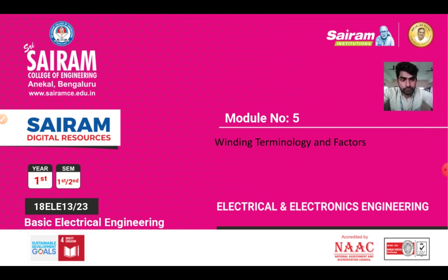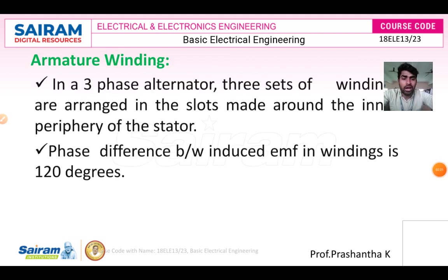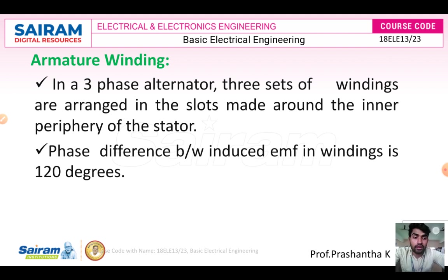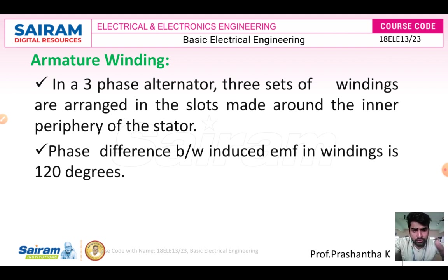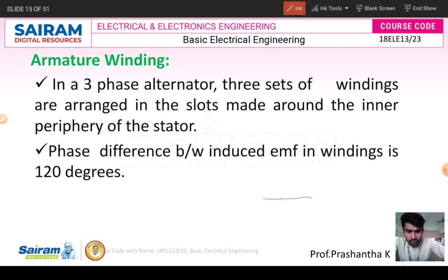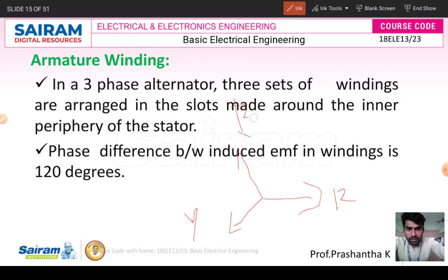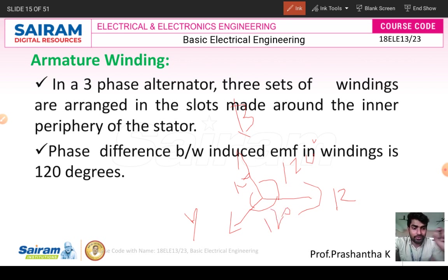The armature winding is placed in the stator with three-phase windings, connected either in star or delta configuration. The R, Y, and B conductors are placed 120 degrees apart from each other in the stator slots. The phase difference between R, Y, and B is 120 degrees.